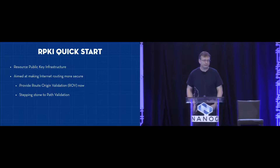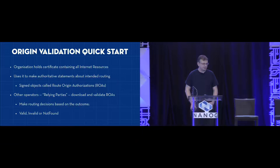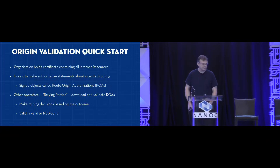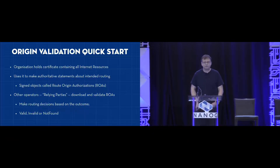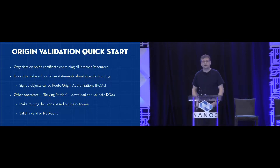Currently RPKI is pretty much exclusively used for route origin validation, or ROV, but further uses are possible and indeed envisioned — one of them being path validation. Route origin validation means the holder of a resource announces which autonomous systems they intend to announce routes for. These statements are called Route Origin Authorizations, or ROAs. If you are operating a router participating in BGP, you can collect these statements and produce filters that decide whether a route announcement you receive is valid or invalid based on these statements.